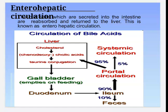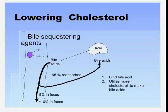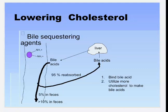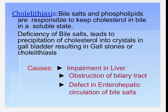The remaining 5% enters the systemic circulation. This is the diagrammatic representation of how bile acids are reabsorbed through the liver. This entire process is known as enterohepatic circulation.